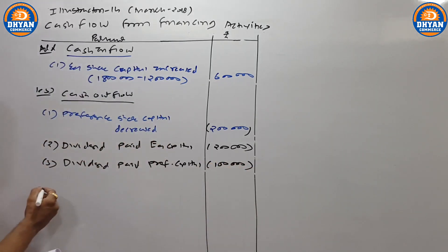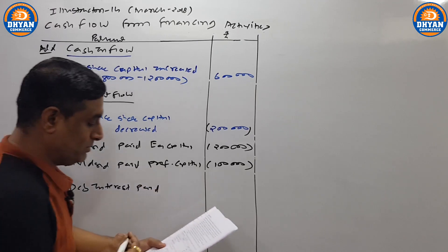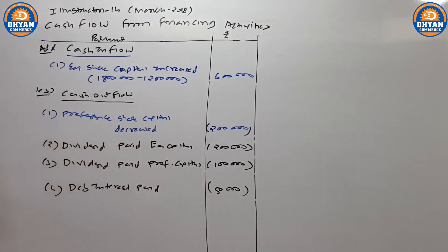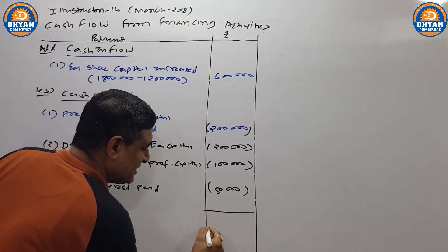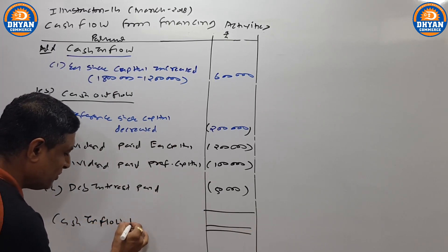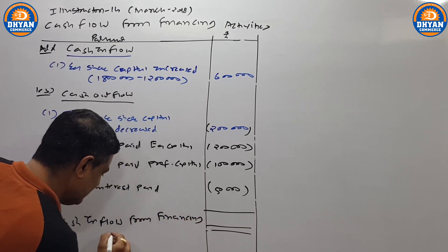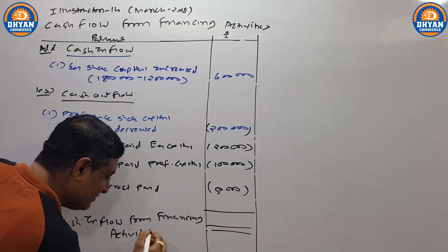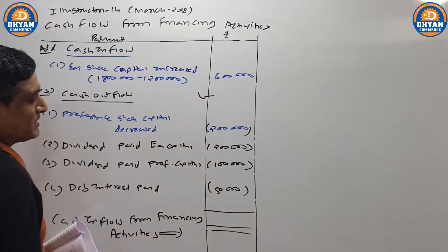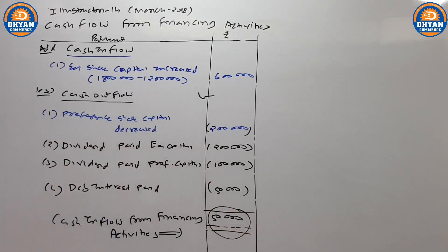Last mein — debenture interest jo bhi payment karna hai — finance activity mein aayega. Debenture interest paid — to bachcho dekh sakte ho kitna aasaan question hai financing activities likhna. Paise aaye 6,00,000 — gaye: 2,00,000 preference decrease, 2,00,000 equity dividend, 1,00,000 preference dividend, 1,50,000 debenture interest — sab minus karoge. Plus waala zyada hai — cash inflow from financing activities, I think 50,000. 2 saal ke data mein difference kaise liya aapko samajh aaya hoga. Video pause kijiye, question likh lijiye, screenshot le lijiye.